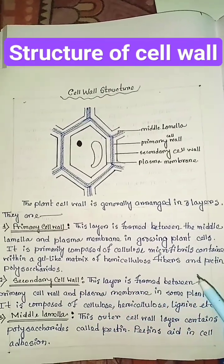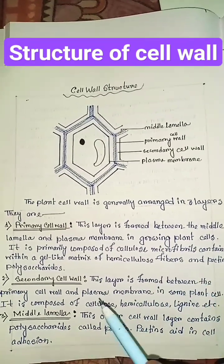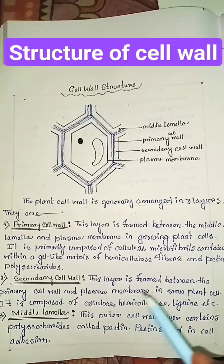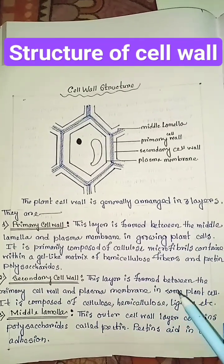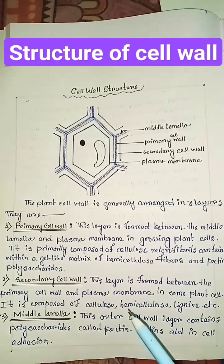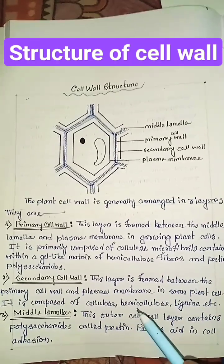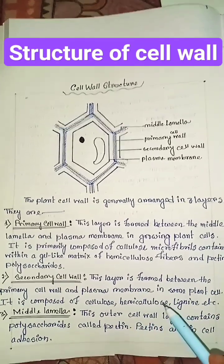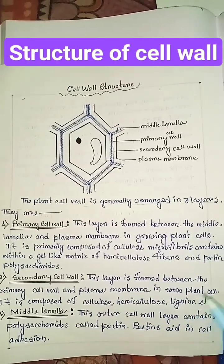Secondary cell wall is formed between the primary cell wall and plasma membrane in some plant cells. It is composed of cellulose, hemicellulose, lignin, etc.